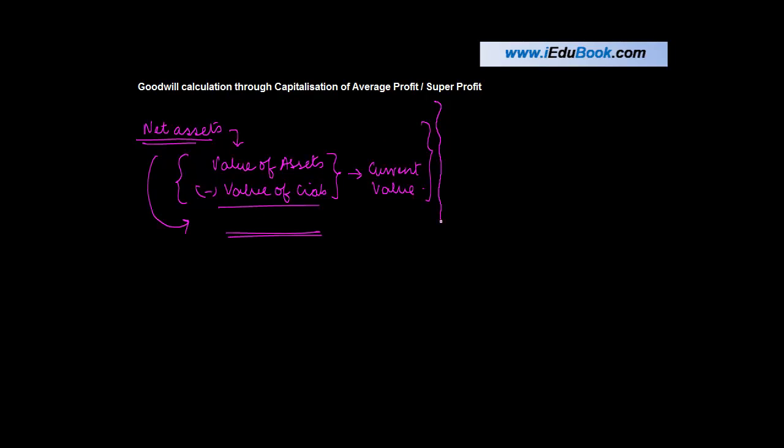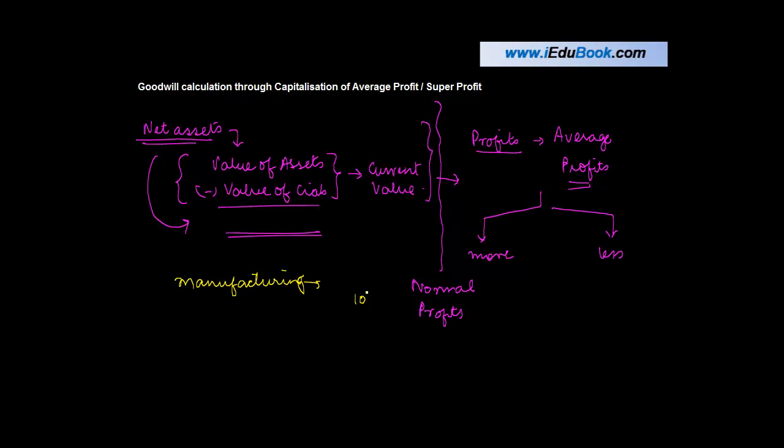Based on these net assets, the company earns some profits, also known as the average profits. These are basically the actual profits which a company earns. Depending on how you are using the assets of the business, these profits can be either more or less than the normal profits earned by a company. For example, if you are engaged in manufacturing of a commodity, a normal company in that range will earn 10% return.